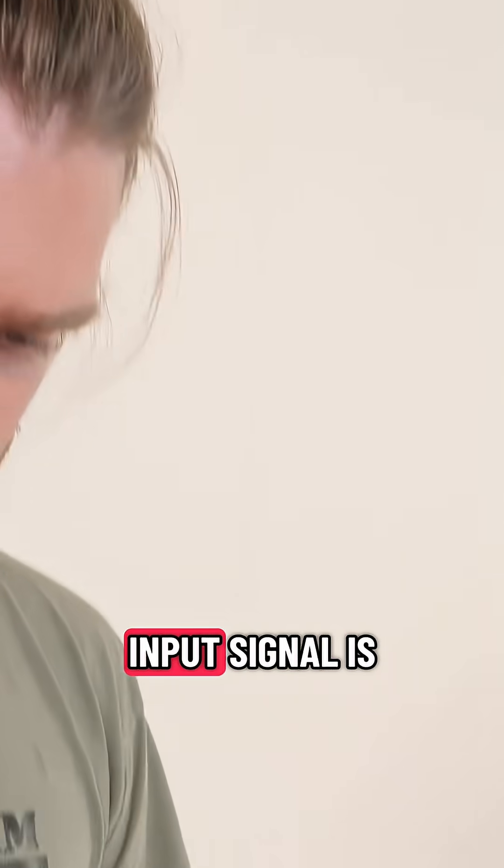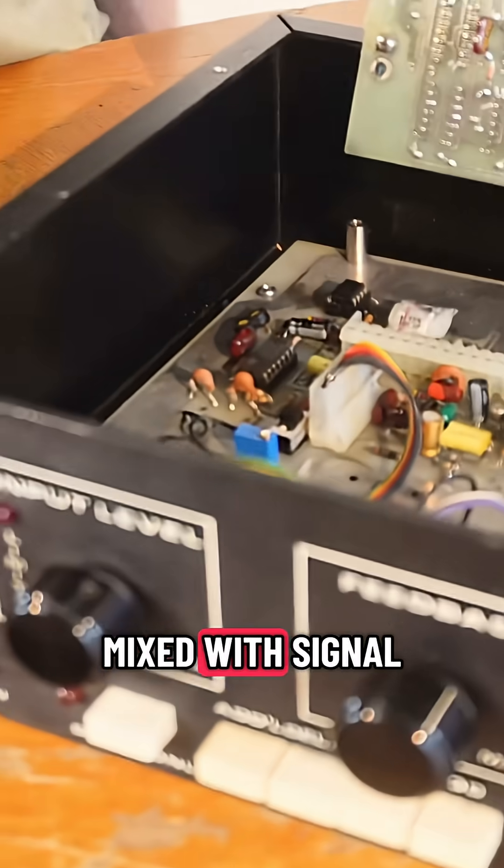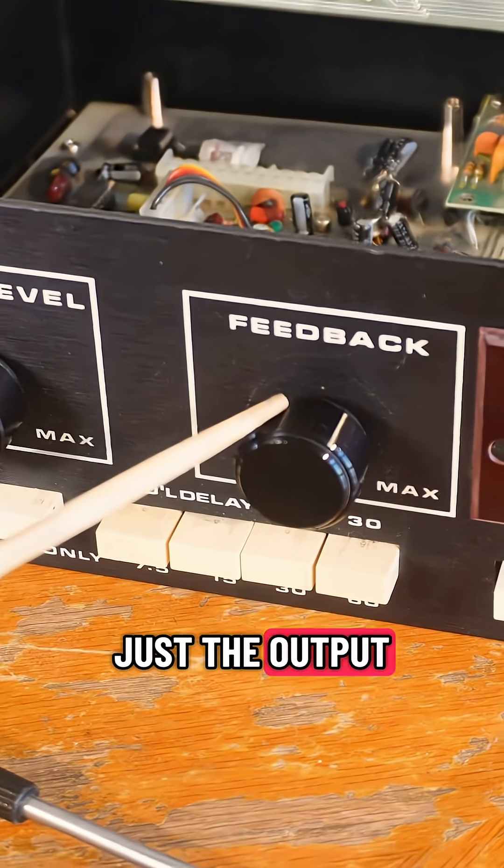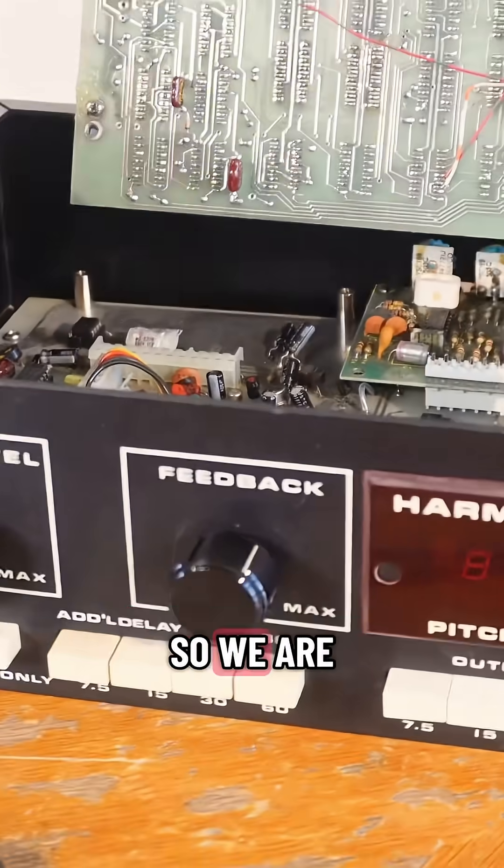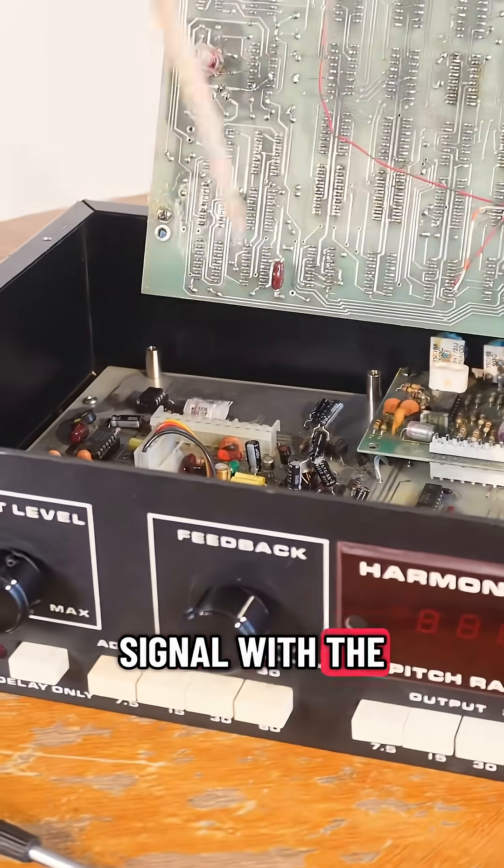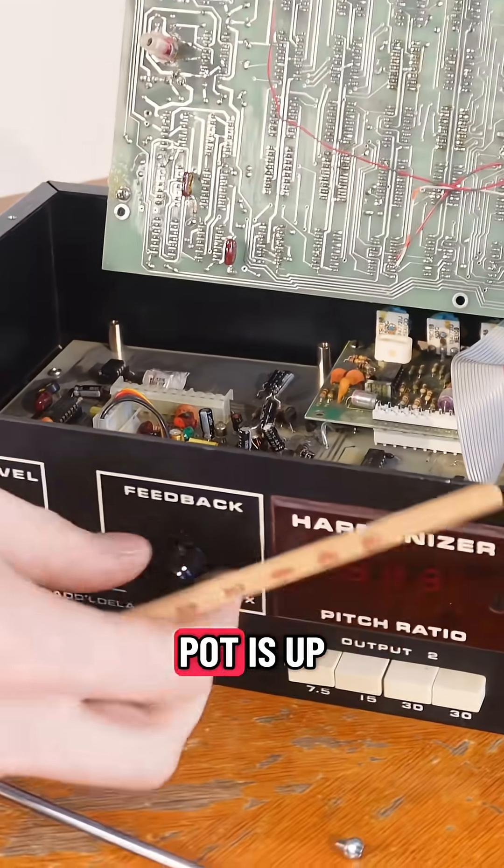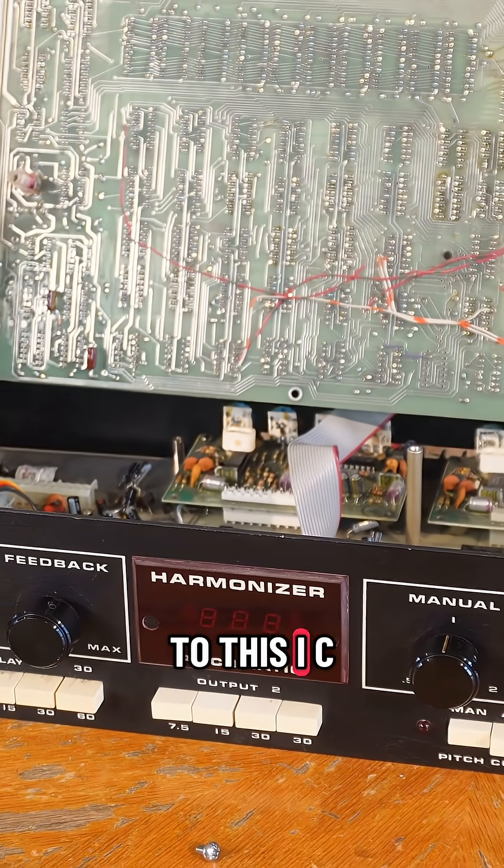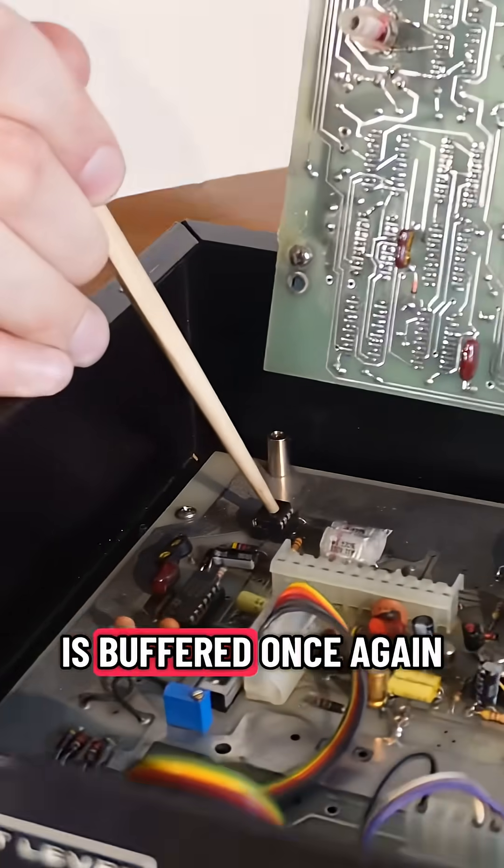And then the input signal is mixed with signal coming through the feedback pod, which is essentially just the output of the unit. So, we are mixing the input signal with the output signal if the feedback pod is up. The output of that is sent to this IC, which is IC0. That is buffered once again.